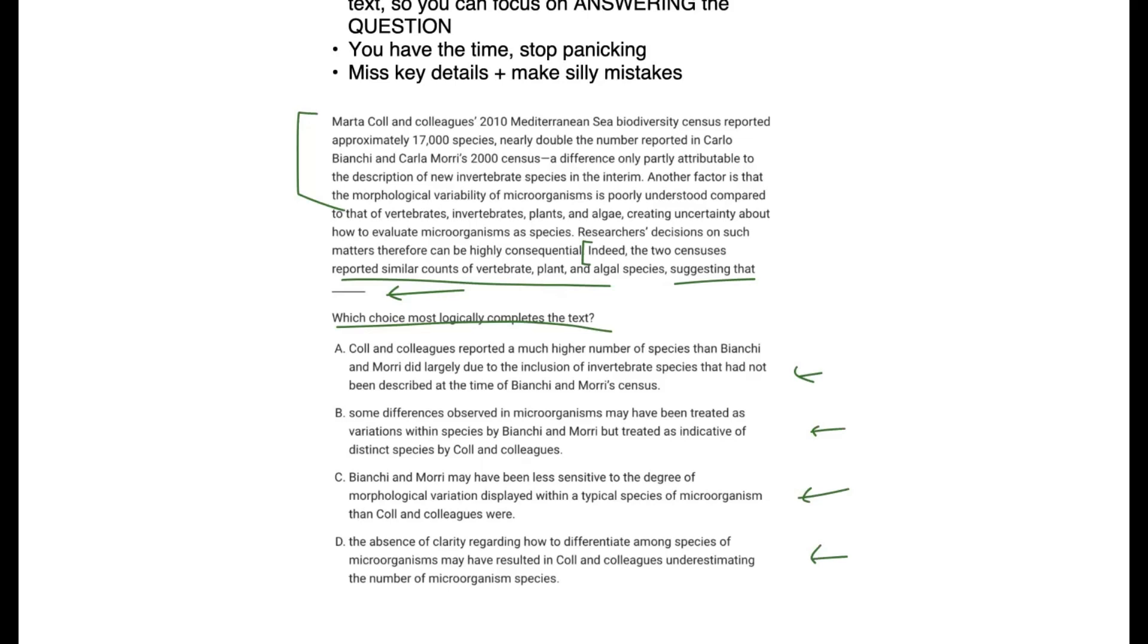But if you looked at the context here, you can see that there's actually some major disparities in terms of what the census actually saw. So this one group had 17,000, which was nearly double the other group, and it says it was only partly attributable to the description of new vertebrate species, so we know it can't be A. And then this here is interesting - right before that end conclusion that you might have skipped to is this important detail. Another factor is the morphological variability of microorganisms is poorly understood compared to the vertebrae. So there's uncertainty about how to evaluate those microorganisms, and therefore the way that researchers evaluate them might differ.